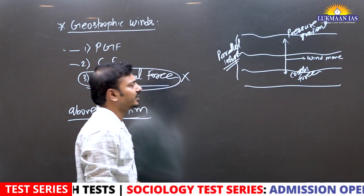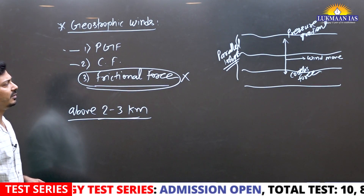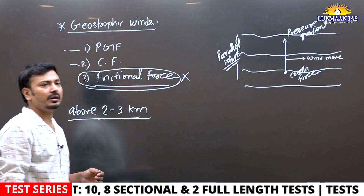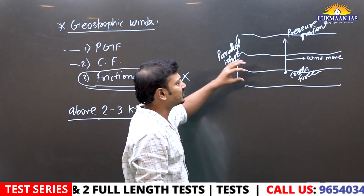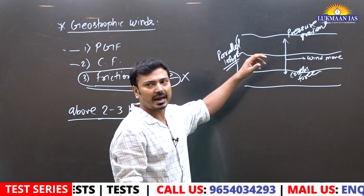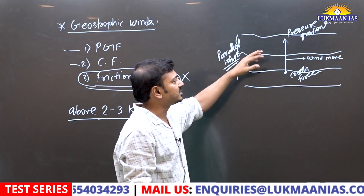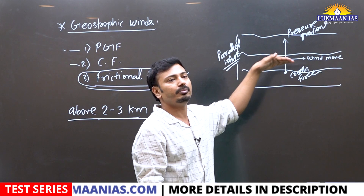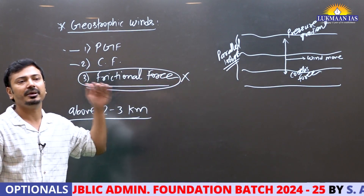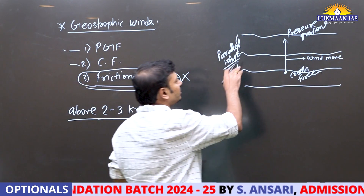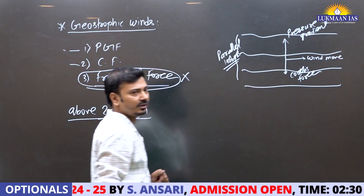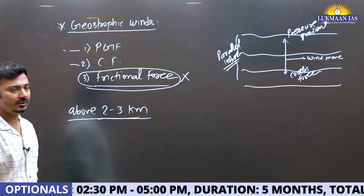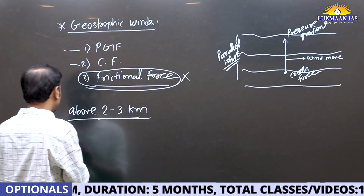Geostrophic wind is the wind which moves or flows at a certain height above the ground, where the pressure gradient force and Coriolis force balance each other as they act in opposite directions. The resultant wind direction will be parallel to the isobars. These are called geostrophic winds.